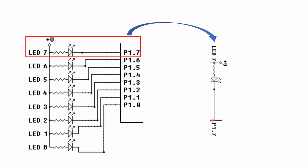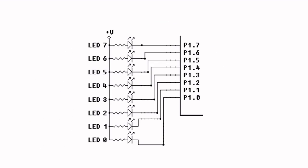The anode is connected to the positive supply volts via a resistor, and the cathode is connected to the port pin — in this case P1.7. Now if we put a logic 0, that means approximately 0 volts here, and because this part is more positive than this part, a current will flow, and when current flows through this circuit the LED will light up.